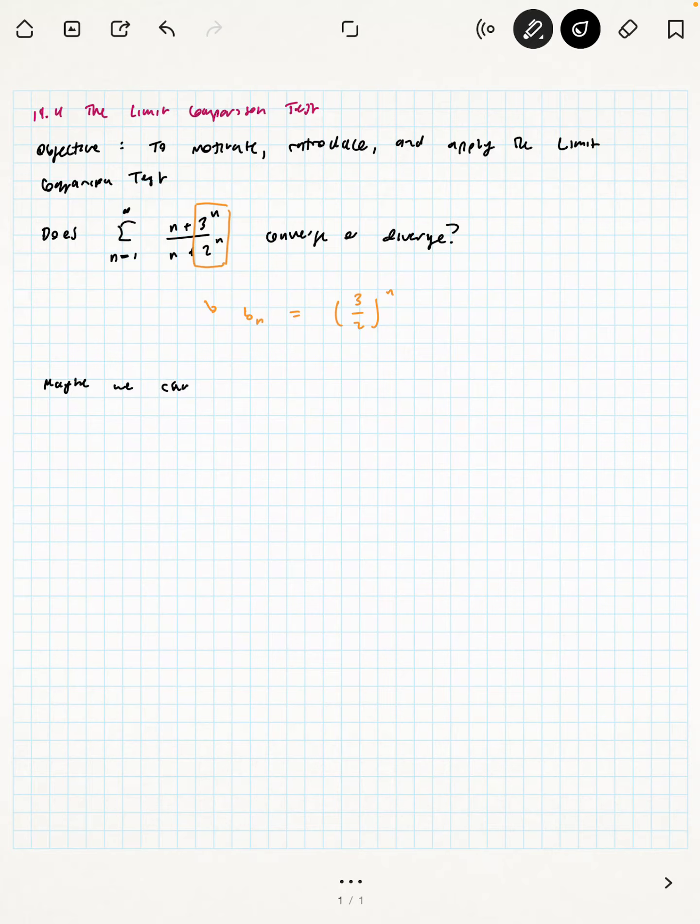So our reasoning here is that maybe we can show that eventually, a sub n is close to b sub n, a sub n being the terms of our original series. And what does that help us do? Because eventually a sub n is close to being b sub n, then we know that eventually the series looks like a geometric series, and so it must diverge.